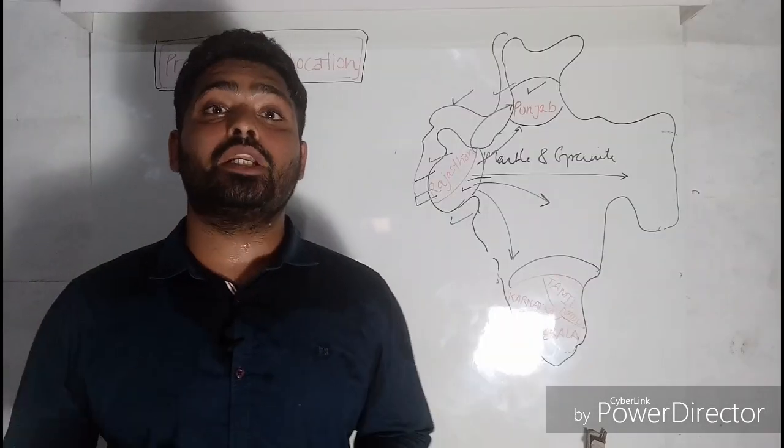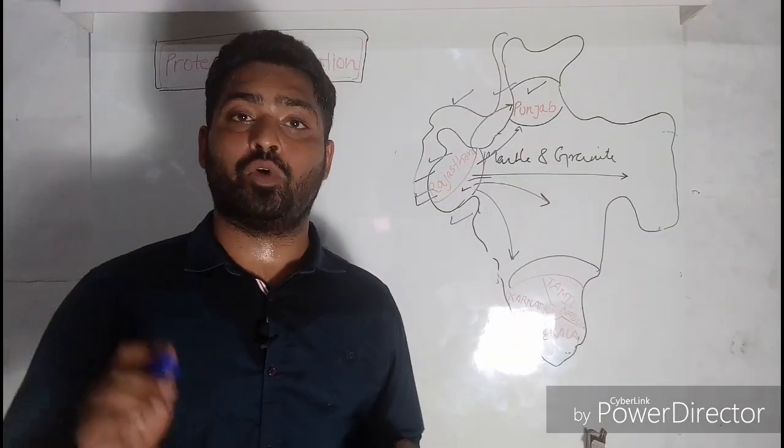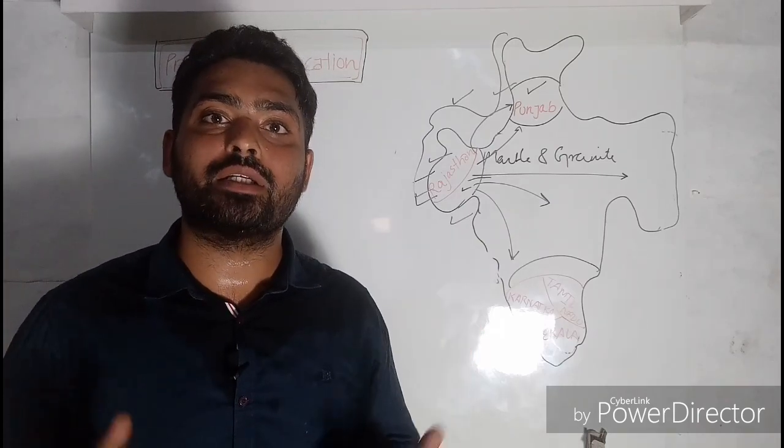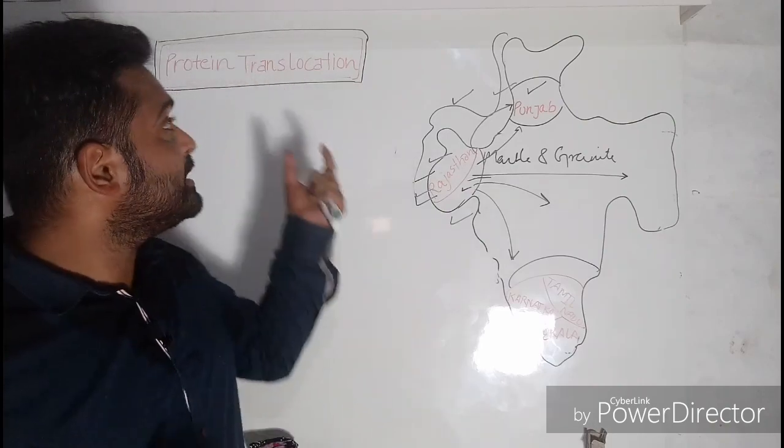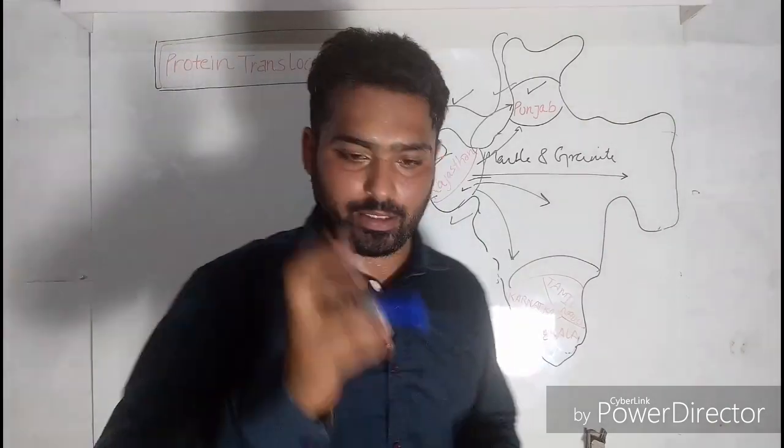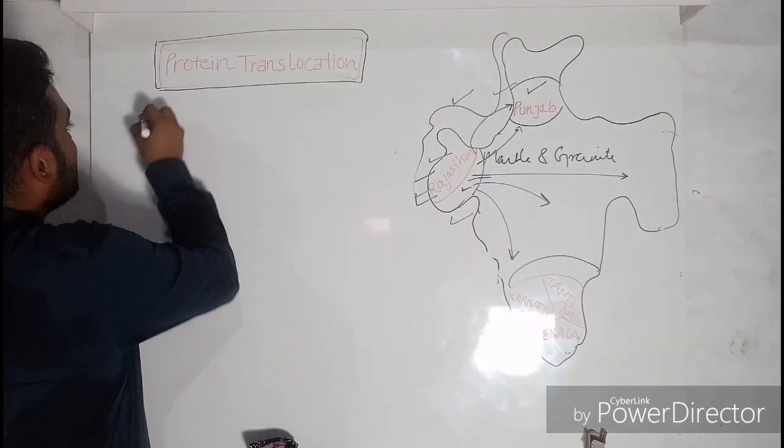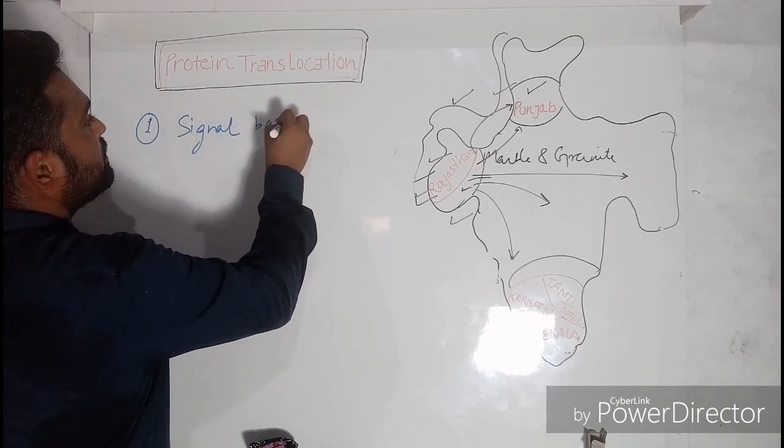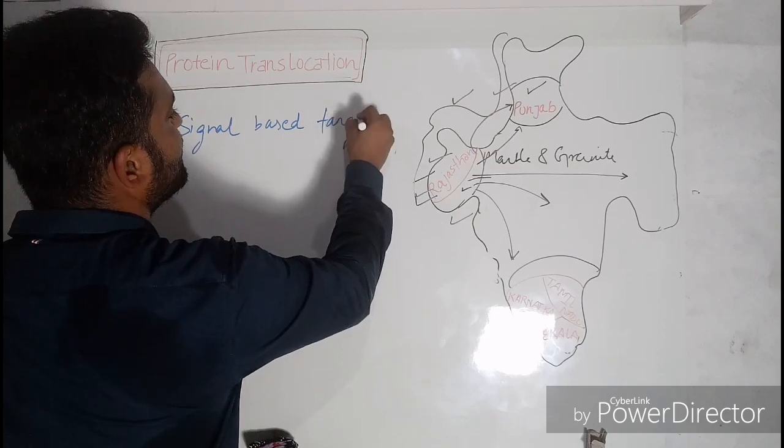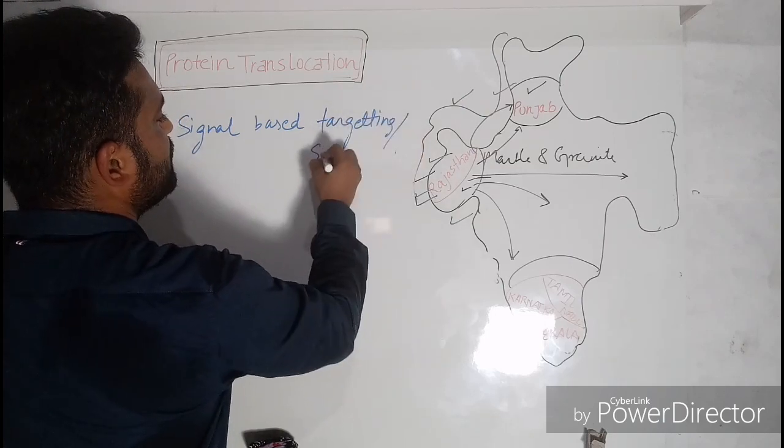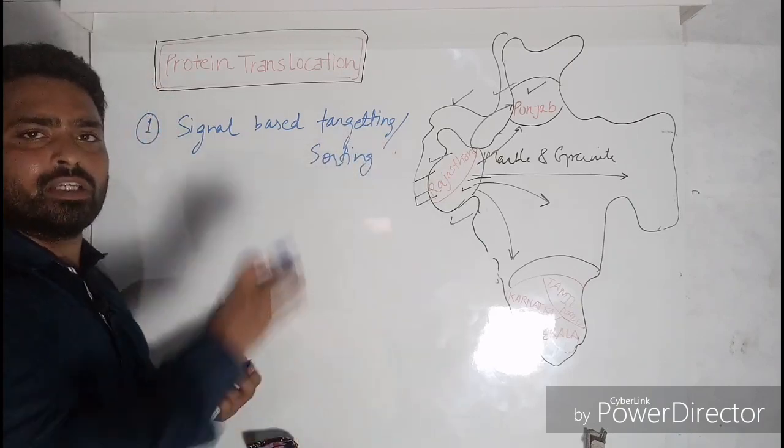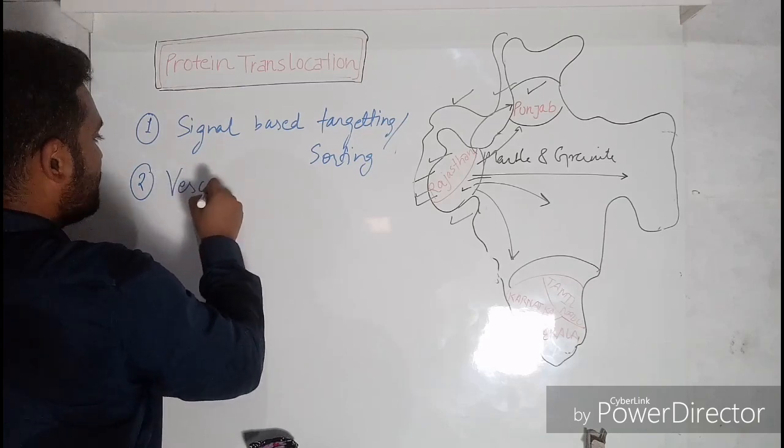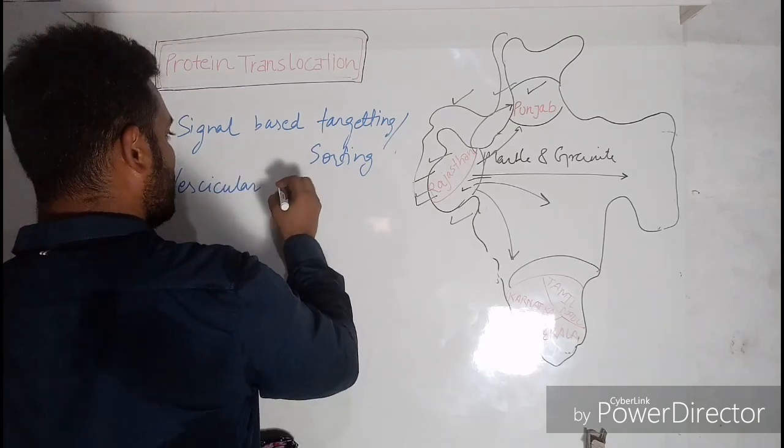So now we know the basic meaning of this cellular process, that is protein translocation. We must have the understanding of the different methods by which these proteins are translocated. So there are two methods. The first one is the signal-based targeting. Then we have second, the vesicular translocation.